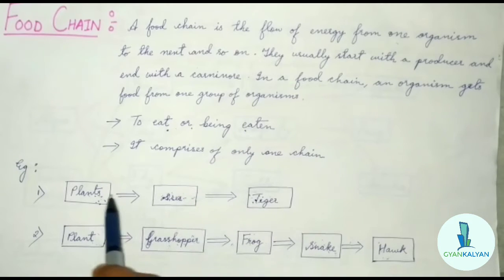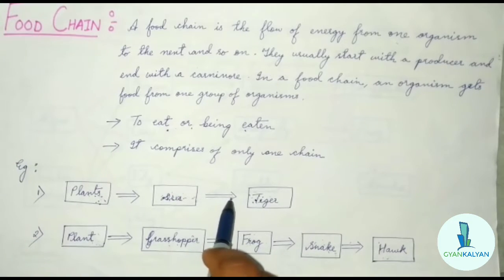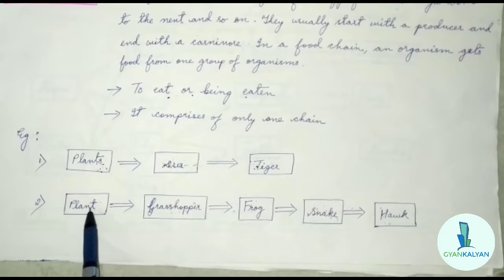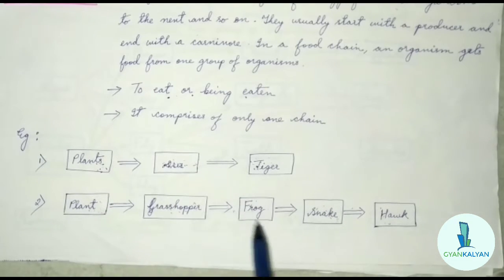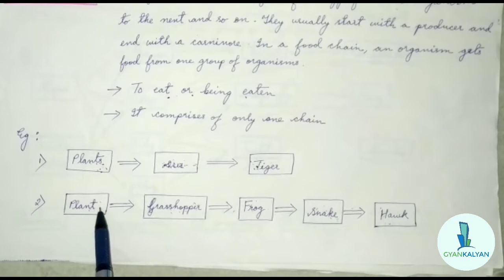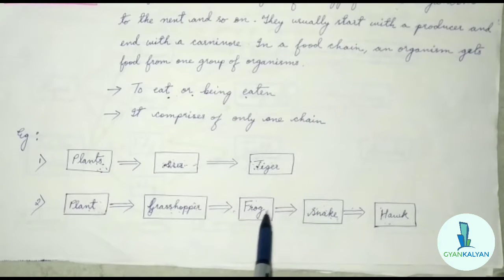In this single chain, energy flows from one organism to the next organism throughout the environment. The next example is: plants are being eaten by grasshopper, then grasshopper is being eaten by frog, then frog is being eaten by snake, and then snake is being eaten by hawk. Here the energy transfer is from plants to grasshopper, then from grasshopper to frog, from frog to snake, and then from snake to hawk.